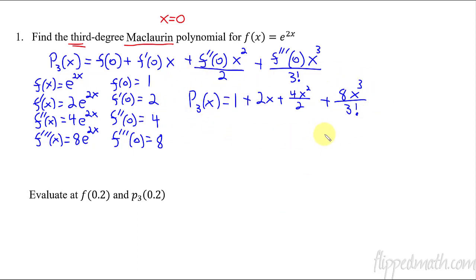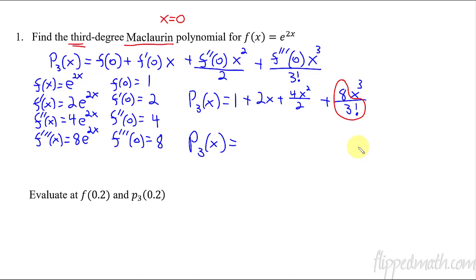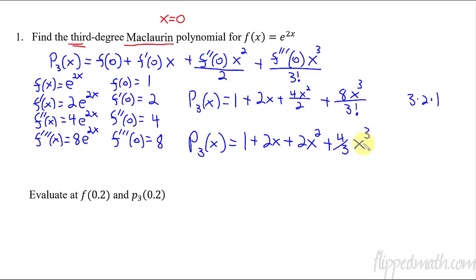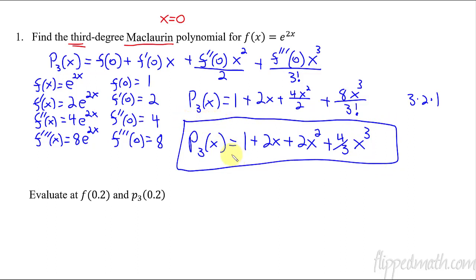This could be the answer for a free-response problem — you could box it and be done. For a multiple-choice problem it will most likely be simplified. You don't have to simplify on free response, but if I simplify: 4 over 2 is 2, and 8 over 3 factorial — 3 factorial is 6 — gives 4 thirds. So the simplified answer is p of x equals 1 plus 2x plus 2x squared plus four-thirds x cubed. That is my Maclaurin polynomial, because it's centered about x equals 0.